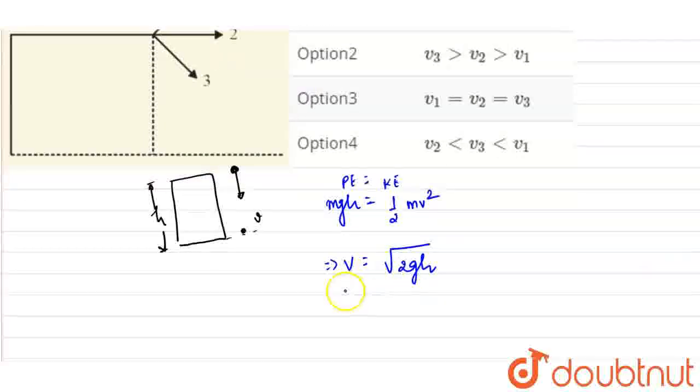So the velocity is independent of the angle. It will be independent of which ball we consider. The value of v is independent of theta.